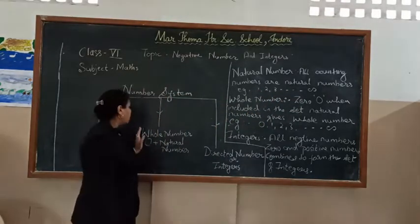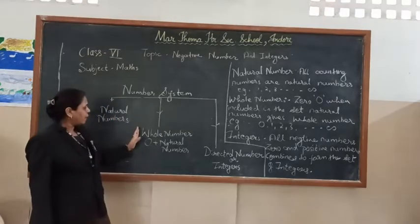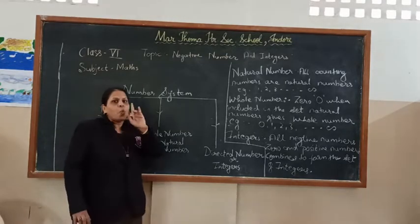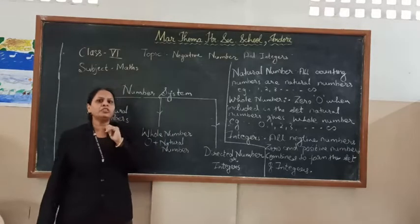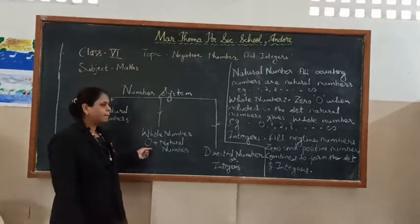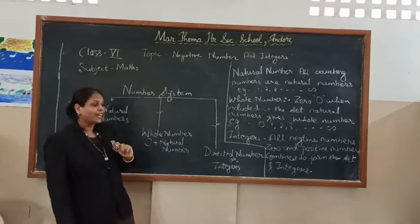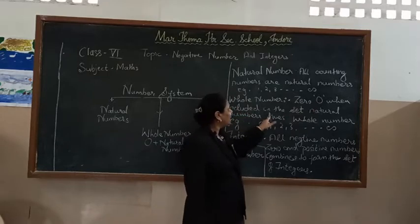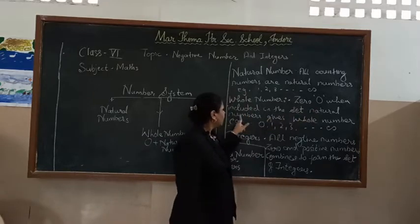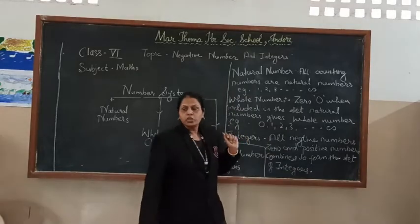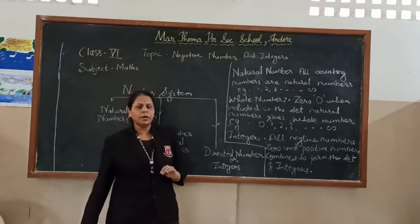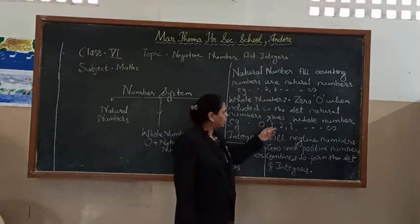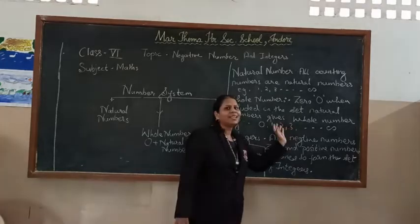Next, whole numbers. Whole number is zero plus natural numbers, meaning it has one member more than the set of natural numbers — and that member is zero. So whole numbers can be defined as: when zero is included in the set of natural numbers, it gives the whole numbers. Whole numbers start from 0, 1, 2, 3, and continue up to infinity.